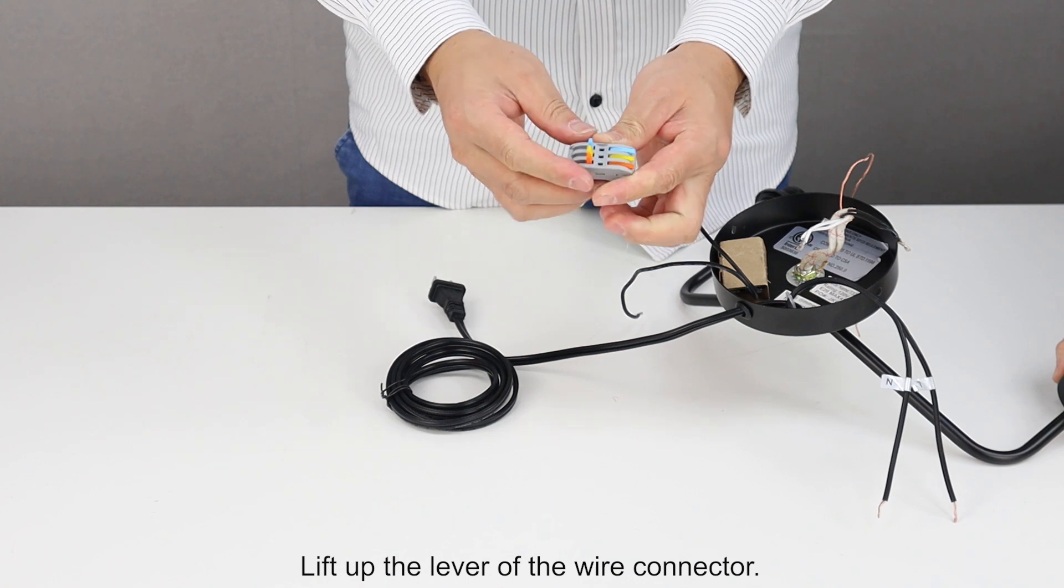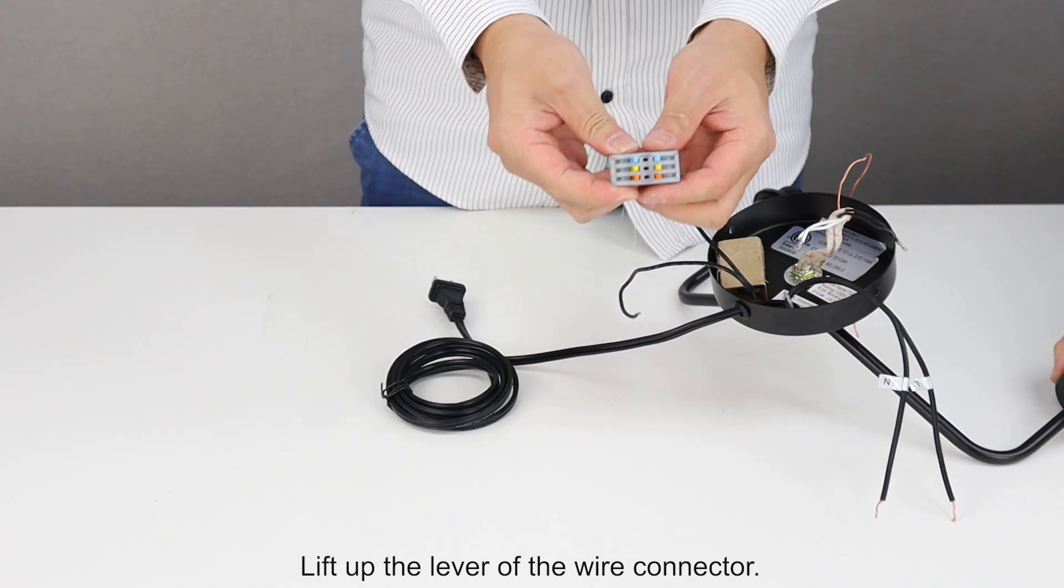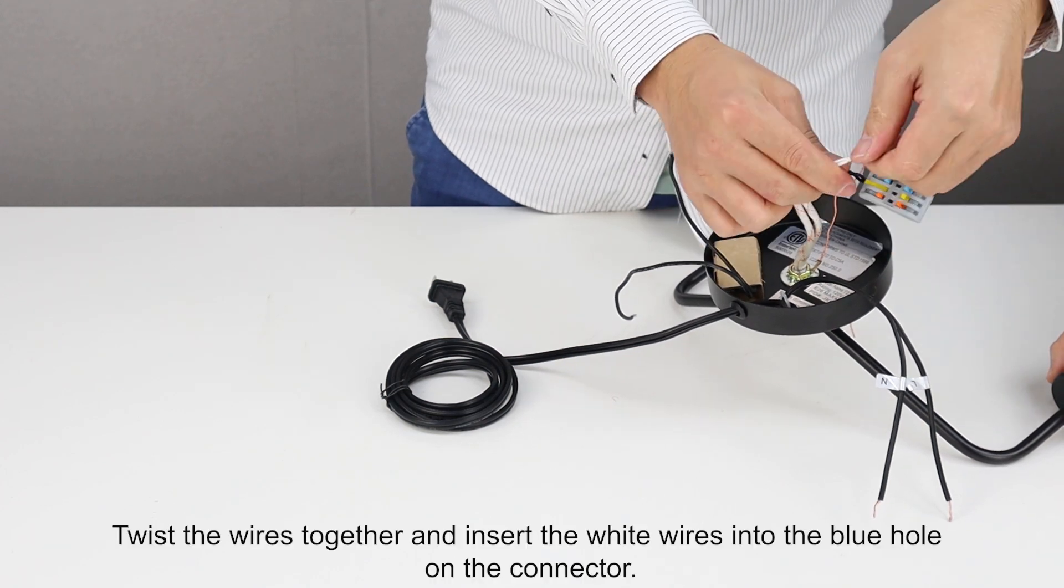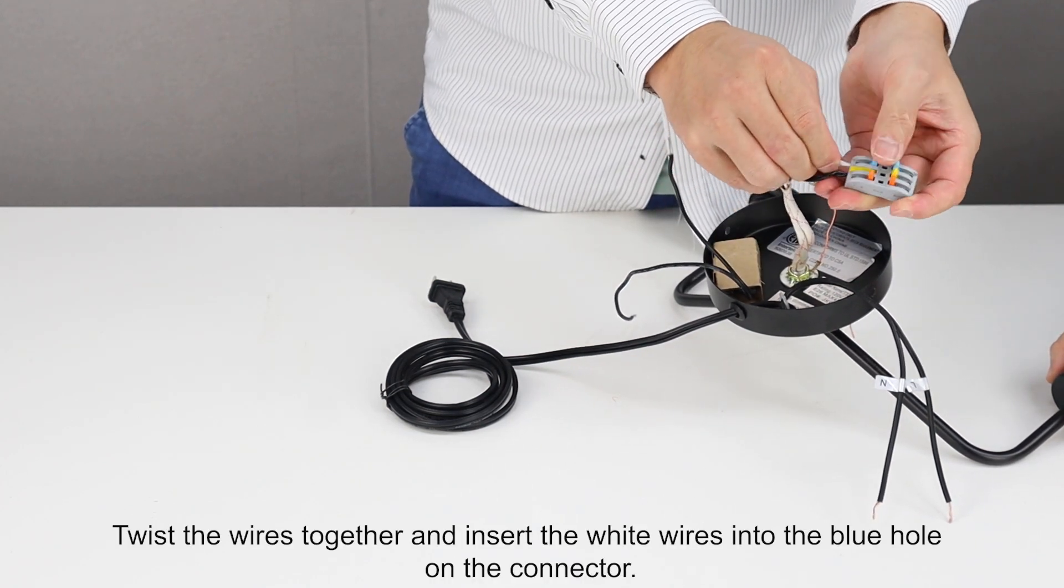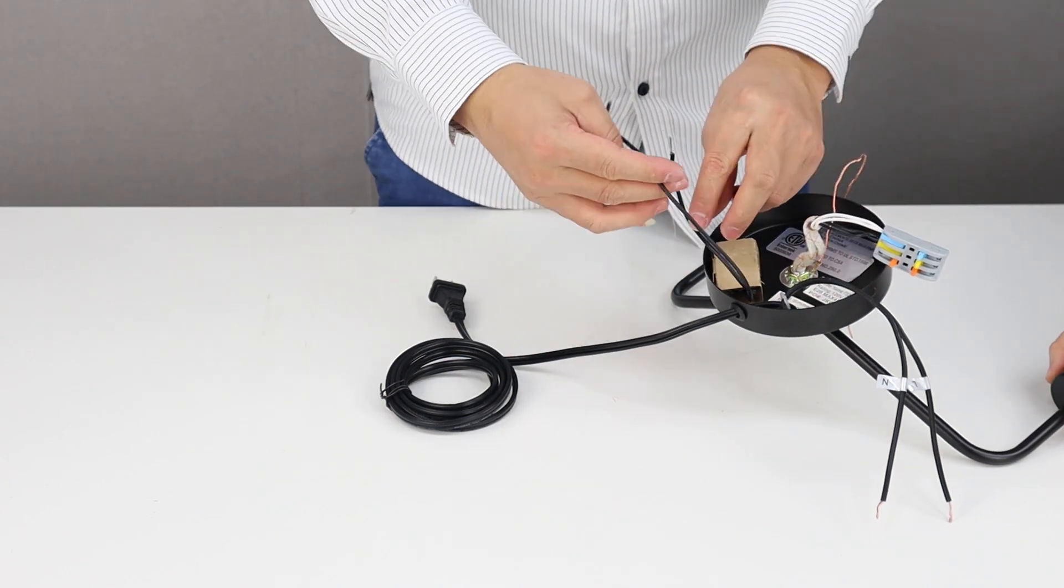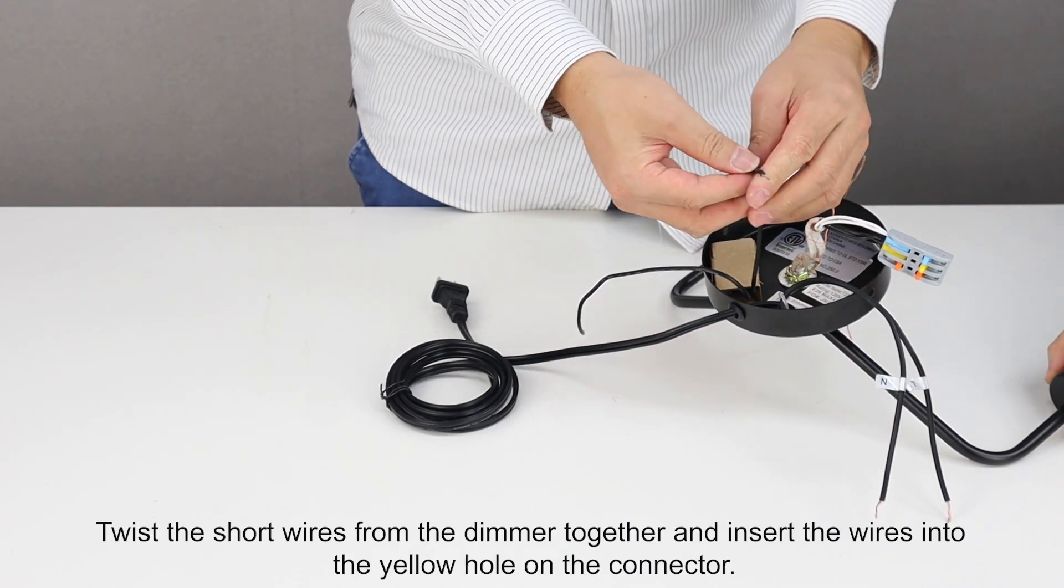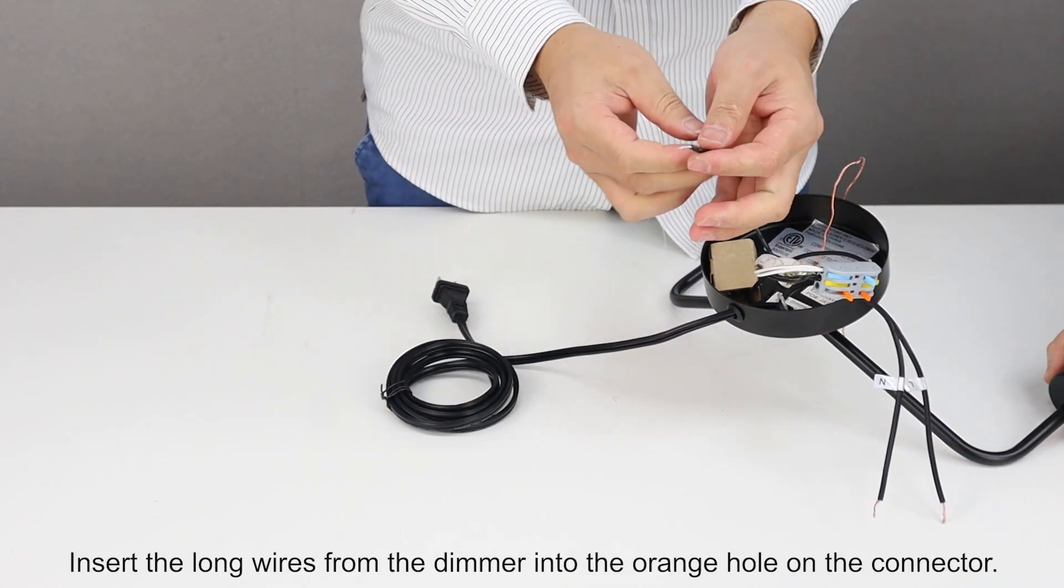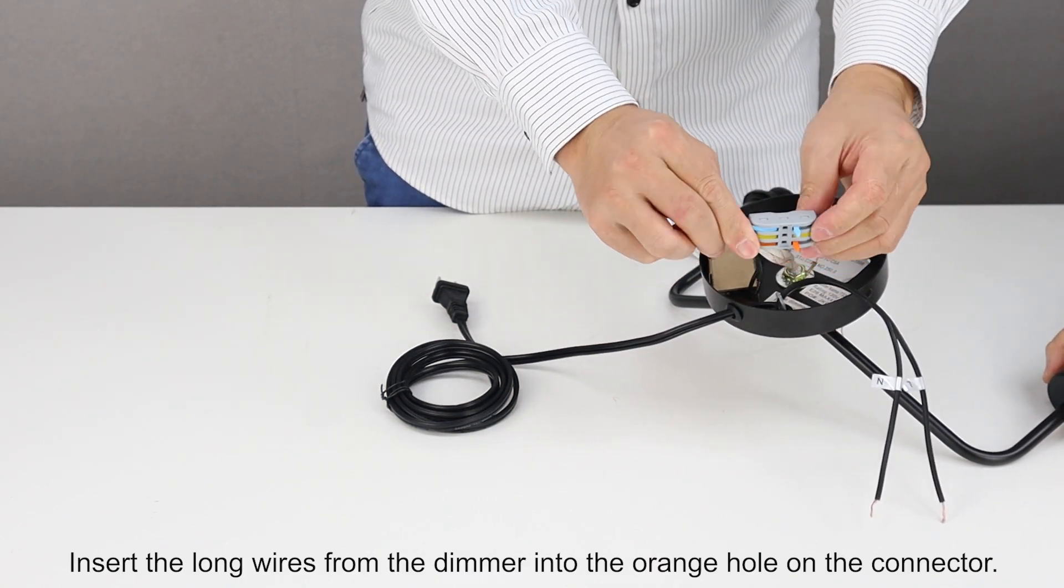Lift up the lever of the wire connector. Twist the wires together and insert the black wires into the yellow hole on the connector. Twist the wires together and insert the white wires into the blue hole on the connector. Twist the short wires from the dimmer together and insert the wires into the yellow hole on the connector. Insert the long wires from the dimmer into the orange hole on the connector.